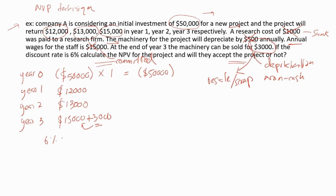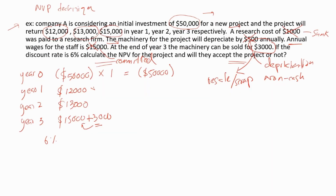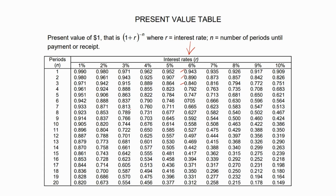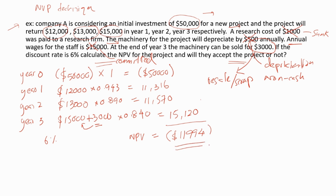Using the present value table at 6% for years 1, 2, and 3, we find the discount factors and multiply each cash flow to get the present values. Year 3 total cash flow is $15,000 + $3,000 = $18,000. Summing all present values gives NPV of negative $11,994. Because the NPV is negative, the company will reject this project.